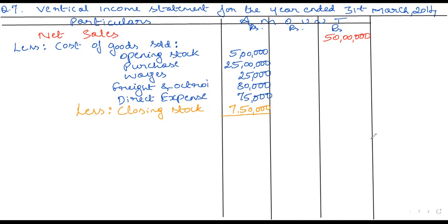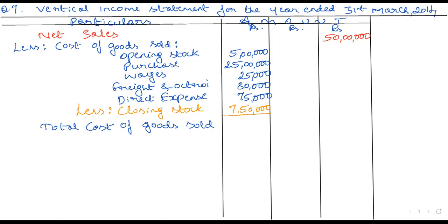Add up all these amounts and don't forget to deduct the closing stock. Then tell me the final COGS balance. The majority answer is 24,30,000 — total COGS in the outer column is 24,30,000.